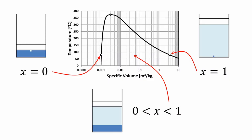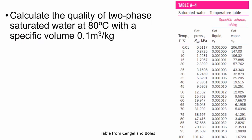We can look at the two-phase saturated mixture on a temperature specific volume diagram as well. Again, the small square shows a saturated liquid where the quality is zero. We have a two-phase state inside the dome where the quality is between zero and one. And then we have saturated vapor shown by the little circle where the quality is equal to one. And outside the dome, the quality is undefined. The next question asks us to calculate the quality of a two-phase saturated water at 80 degrees Celsius with a specific volume of 0.1 cubic meters per kilogram.